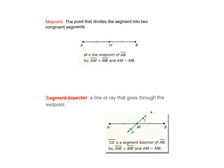Look at this picture. Line CD goes through midpoint M. Then we say line CD is a segment bisector of AB. At the same time, ray MC and ray MD are also segment bisectors.